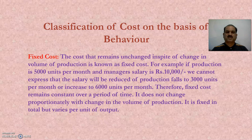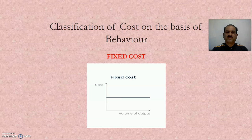Fixed cost is the cost that remains unchanged in spite of change in volume of production. For example, if production is 5,000 units per month and manager's salary is 10,000, the salary will not be reduced if production falls to 3,000 units or increases to 6,000 units per month. Therefore, fixed cost remains constant over a period of time — it does not change proportionately with change in volume of production. It is fixed in total but varies per unit of output.